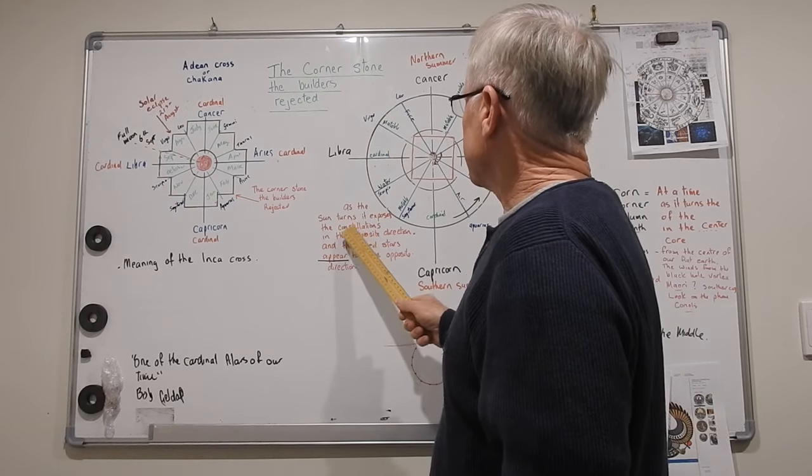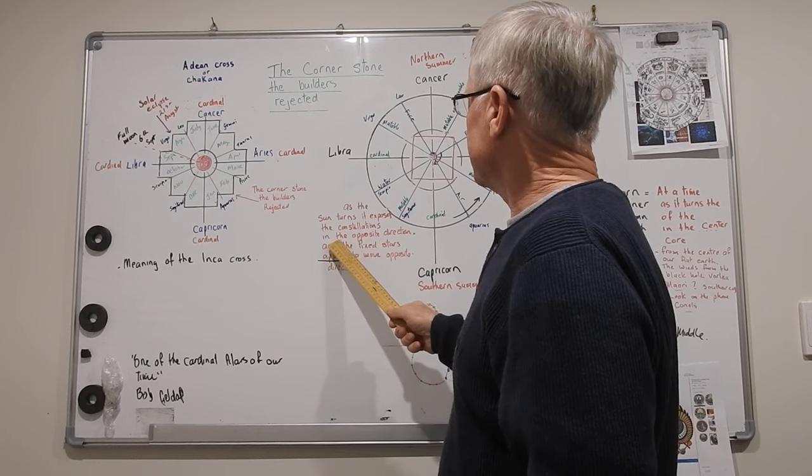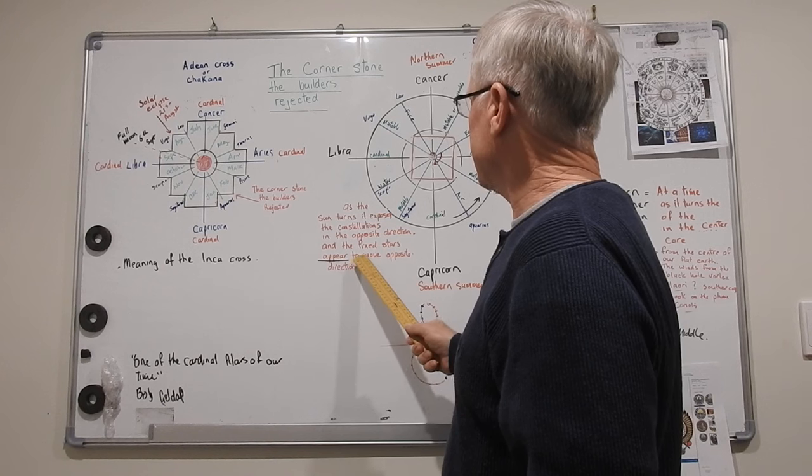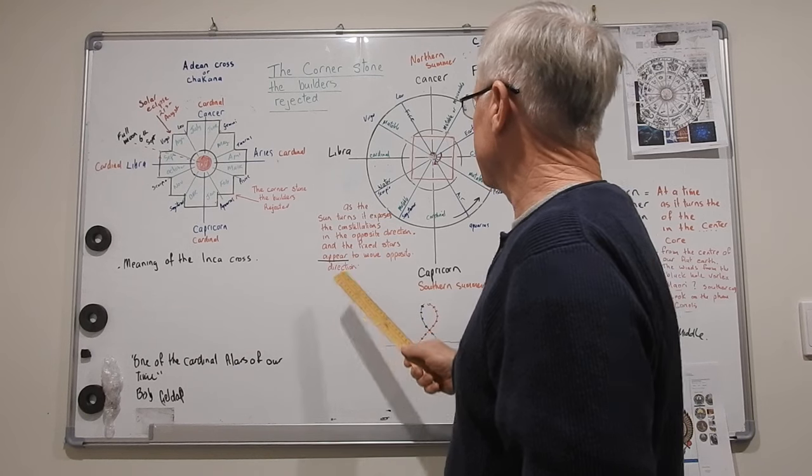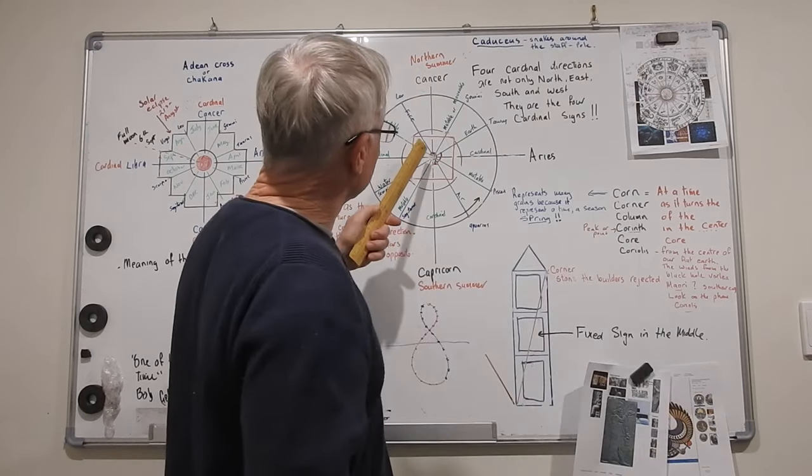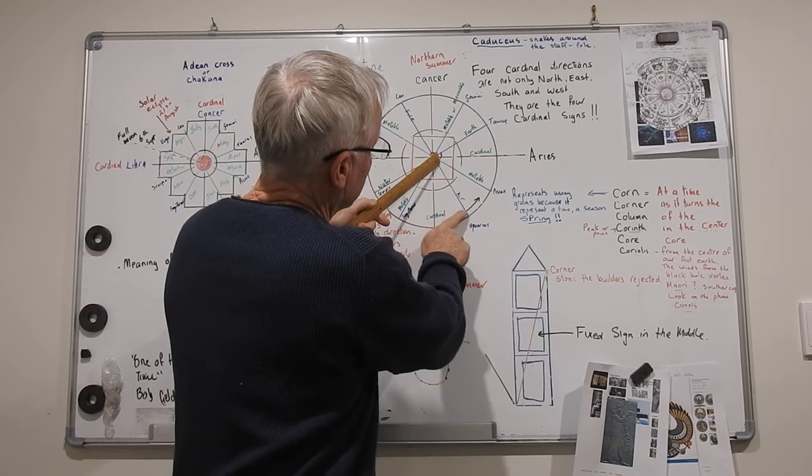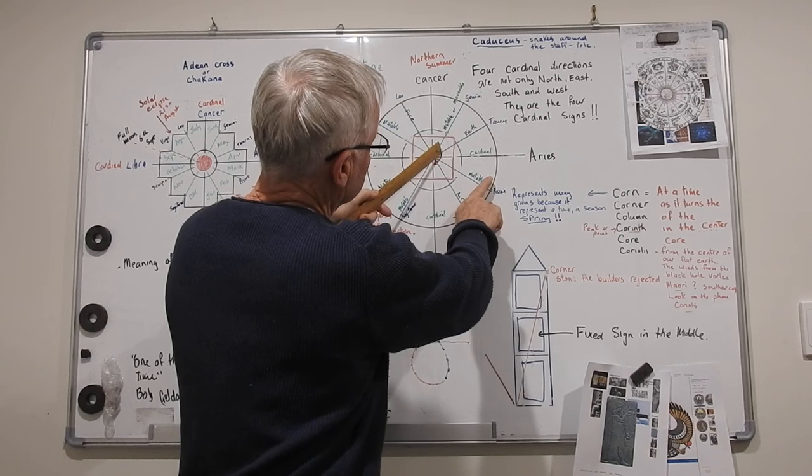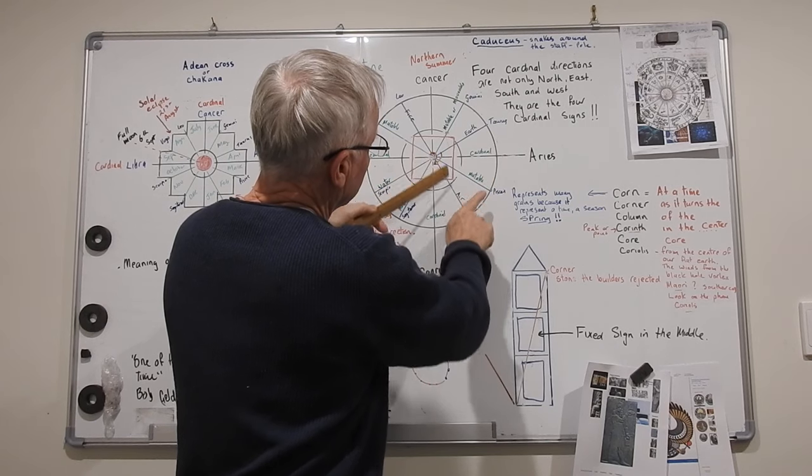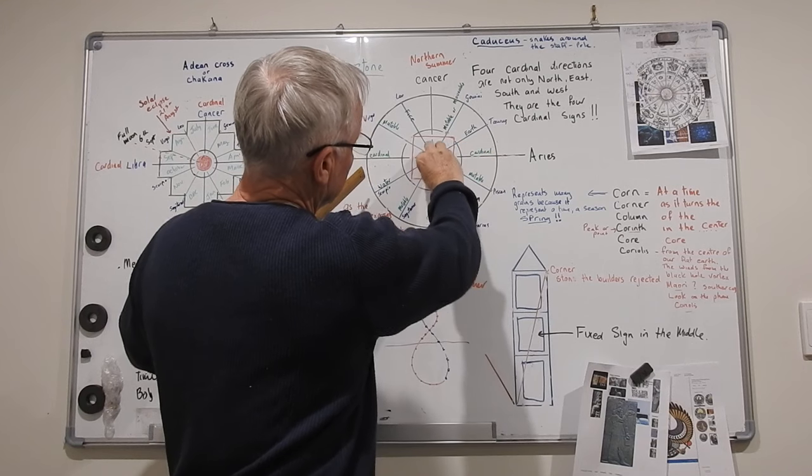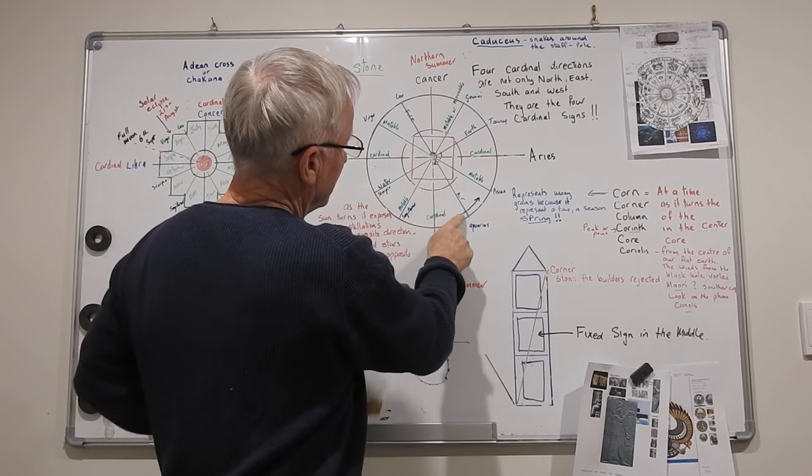As the sun turns, it exposes the constellations in the opposite direction. And the fixed stars appear to move opposite direction. We've got the sun turning 24-7 around here. It's going to make the background stars look as though they're going that way. If the sun is moving slightly quicker, but they're actually moving together.